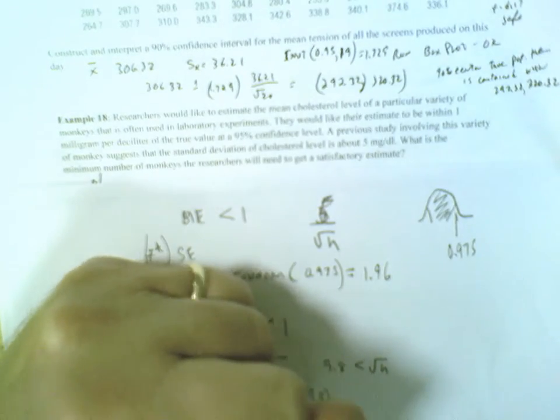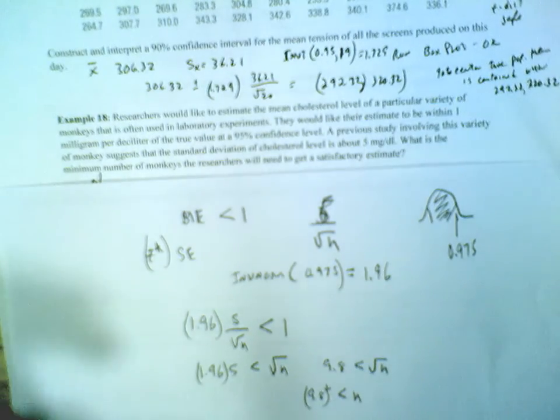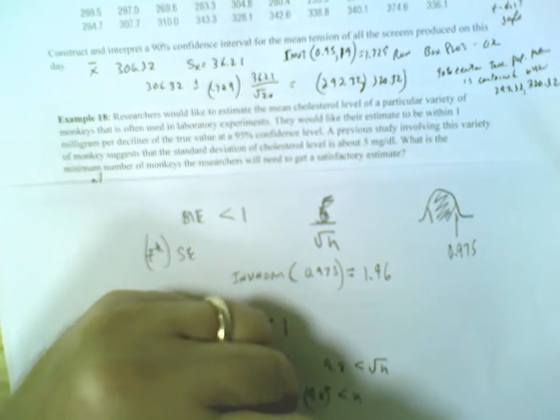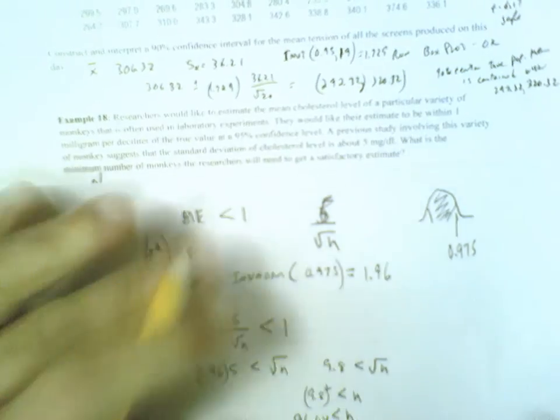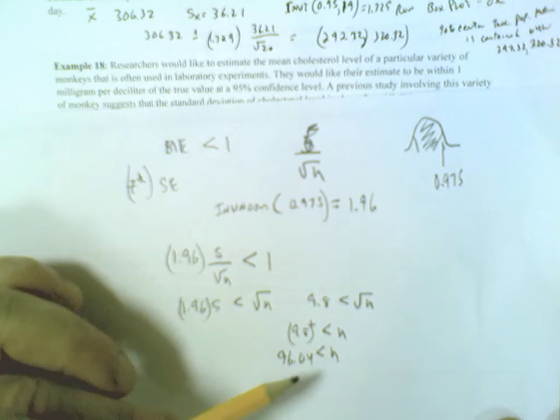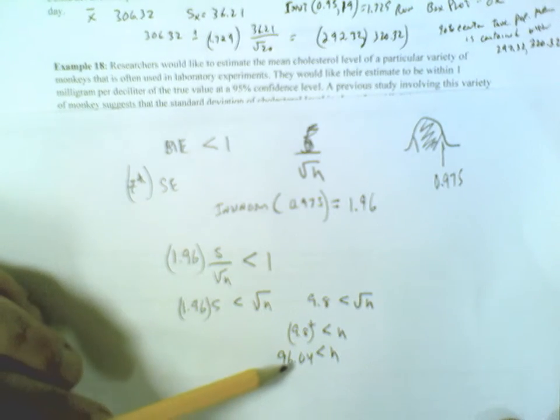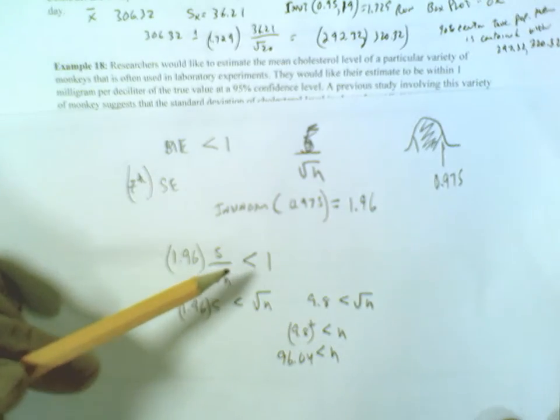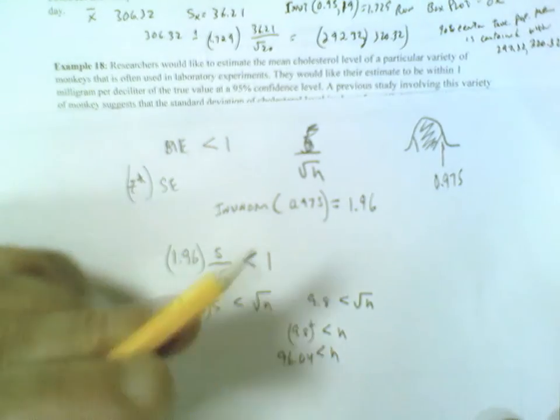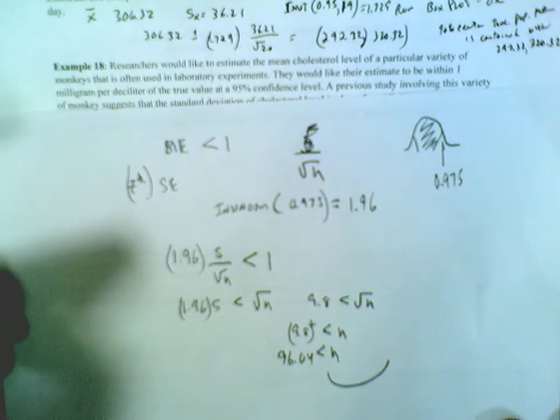Solve for n. 9.8 squared - I want that value less than n. 9.8 squared is 96.04. Now I need my sample size to provide a margin of error less than 1. If I went with 96, I'd be just a little bit short of that desired margin of error. I need to always take my sample one more unit up.